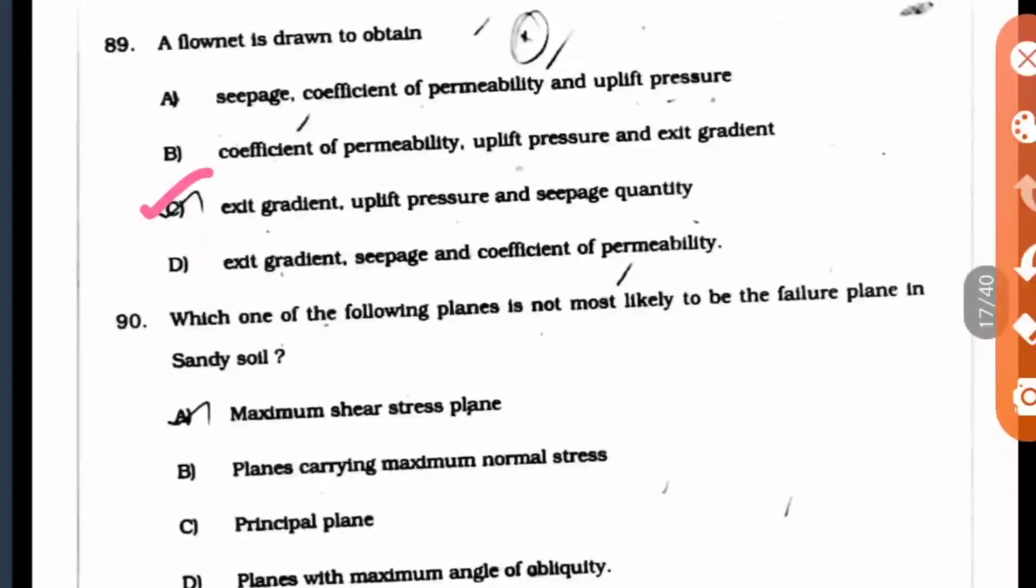Question 90: Which one of the following planes is not most likely to be the failure plane in sandy soil? Here option D, the planes with maximum angle of obliquity. Thank you and keep watching.